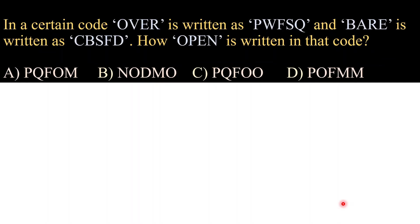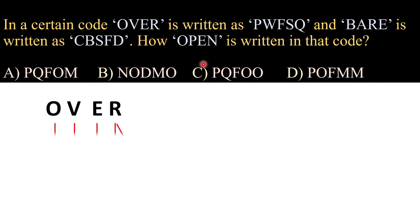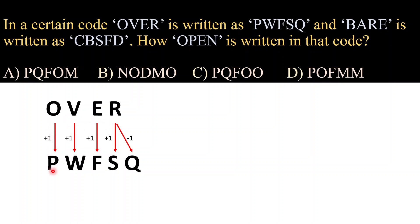In a certain code, 'over' is written as 'pwfsq' and 'bear' is written as 'cbsfd'. How is 'open' written in that code? Now students, just pay attention — in the word 'over' there are only four letters, whereas in the code there are five letters. I am going to tell you how this word 'over' is coded. I have written the word 'over' here and also the given code.